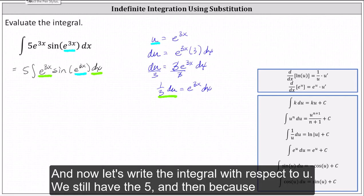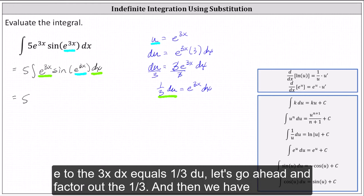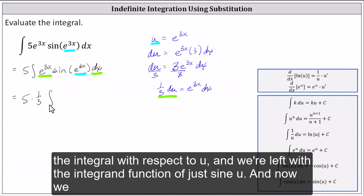So now we know we can substitute 1/3 du for e to the 3x dx. And now let's write the integral with respect to u. We still have the 5, and then because e to the 3x dx equals 1/3 du, let's go ahead and factor out the 1/3, and then we have the integral with respect to u and we're left with the integrand function of just sine u.